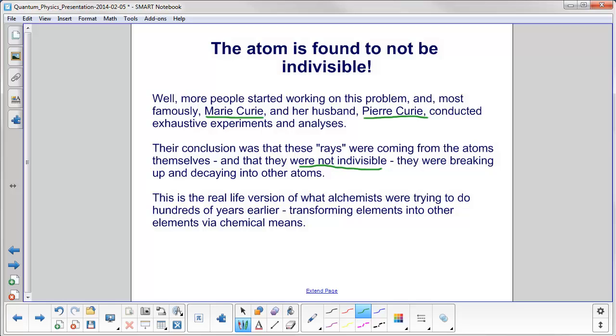This is the real-life version of what alchemists were trying to do hundreds of years earlier. They tried to transform elements into other elements, for example, lead into gold via chemical means. They never could because it just isn't physically possible. But here, the Curies were finding it happening spontaneously in nature.